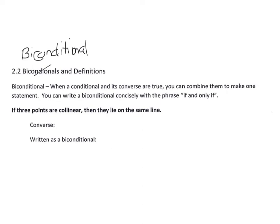A biconditional is when a conditional and its converse are both true and you combine them into one statement. That statement is called a biconditional. You can write a biconditional concisely with the phrase 'if and only if.'